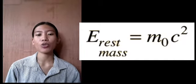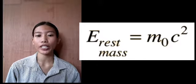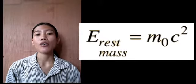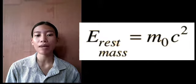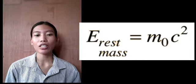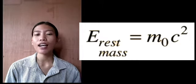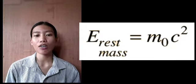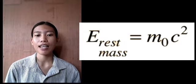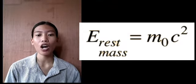E is equal to MC squared. In other words, rest energy is the energy equivalent to the mass of a particle at rest in an inertial frame of reference. The rest energy is equal to the rest mass times the square of the speed of light.